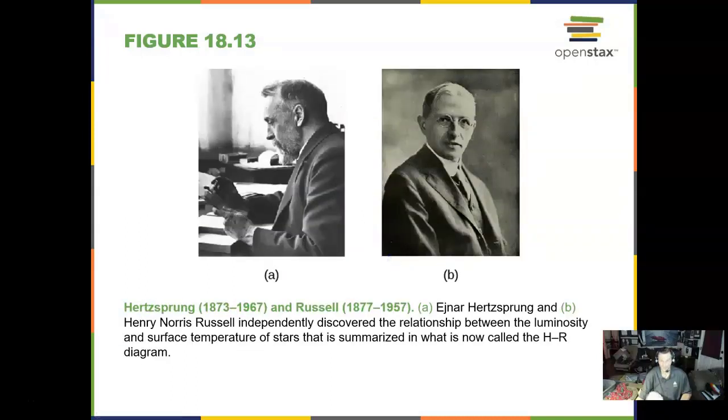Well, these two men were giants in astronomy. Hertzsprung and Henry Norris Russell independently discovered the relationship between luminosity and surface temperature of stars for color, brightness, magnitude. This is summarized in the most important diagram that I can identify in astronomy. And that is the H.R. Henry Norris Russell, Hertzsprung Russell diagram.